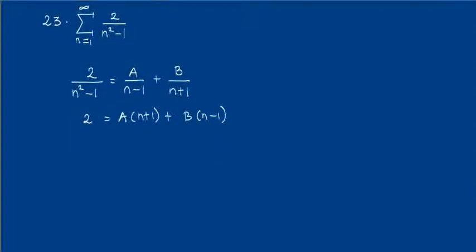And this holds true for every n. So in particular, if n equals negative 1, we have an identity that 2 equals plug-in n equals negative 1 here, which is equal to 0, so 0 plus negative 1 minus 1, which is negative 2B.